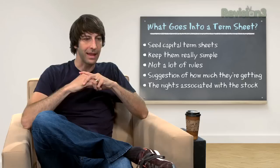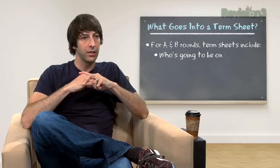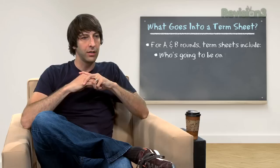Later on, when you're doing A rounds and B rounds, term sheets include things like who's going to be on the board, how many board seats there are. They include things like provisions of if you're a CEO or not, and what happens in the event that they don't want you to be at a later date. Those kinds of things go into a term sheet.